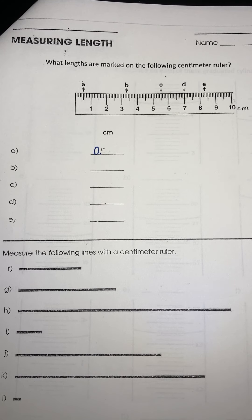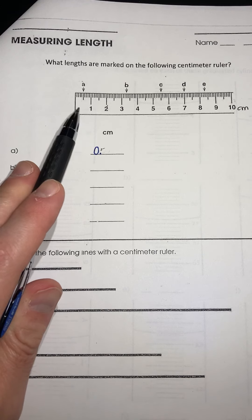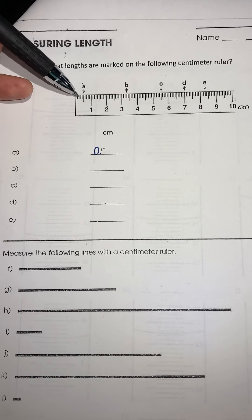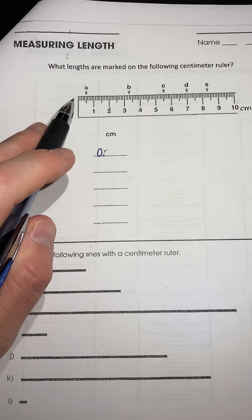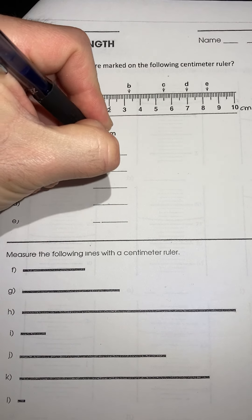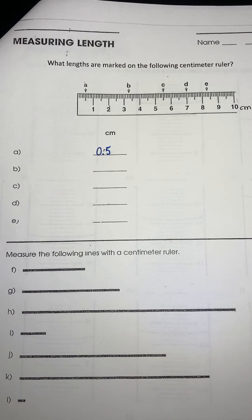Now, is that digit known or is it estimated? Brian, what do you think — that is known. You know that for sure according to your markings. Now the next digit: if each one of these is a tenth of a centimeter, this is your 0.5 mark and it looks like it's right on it. So we're going to make that tenths place a five.